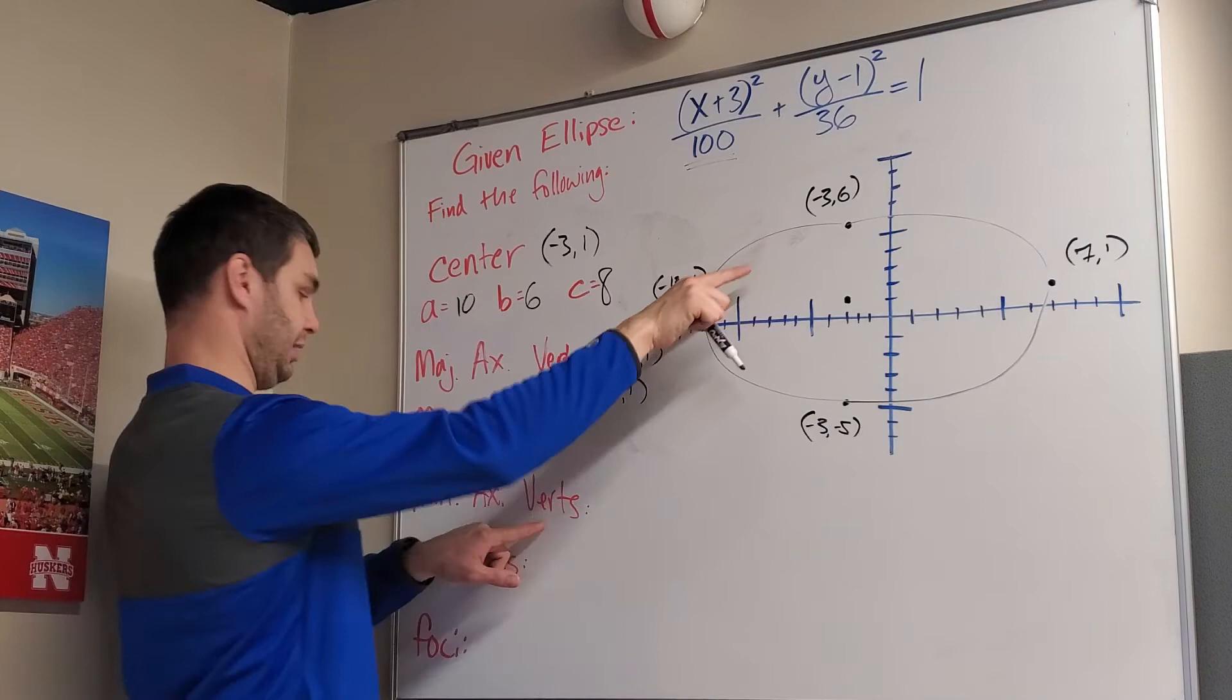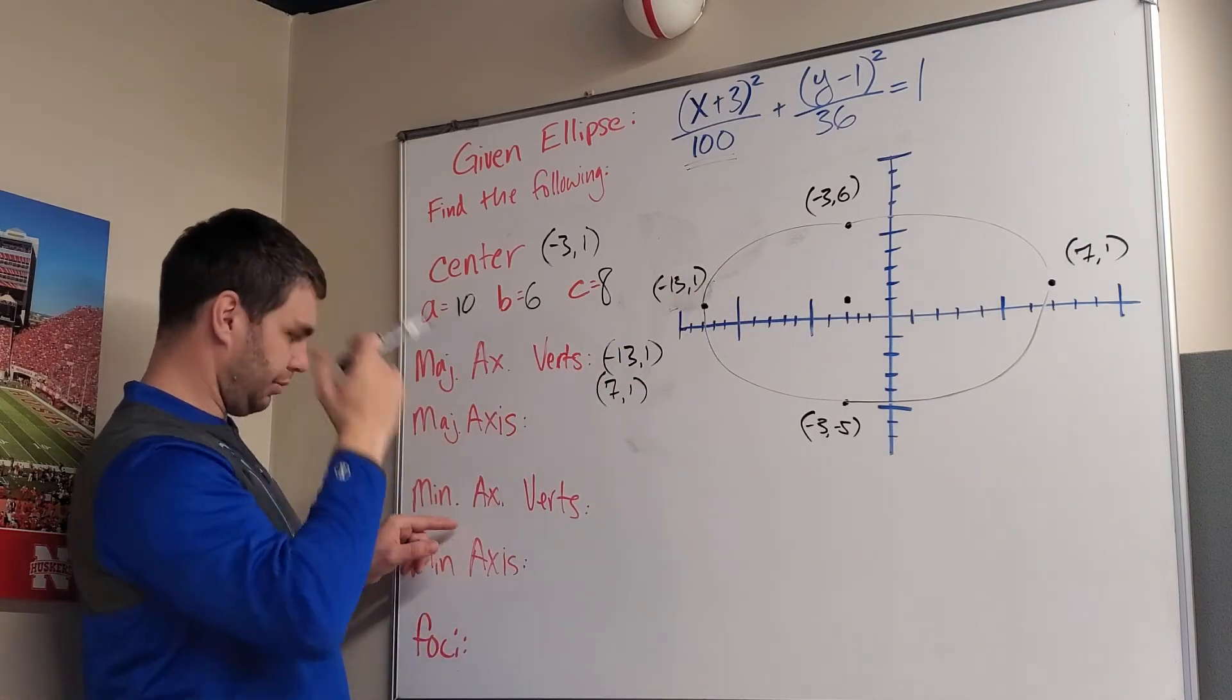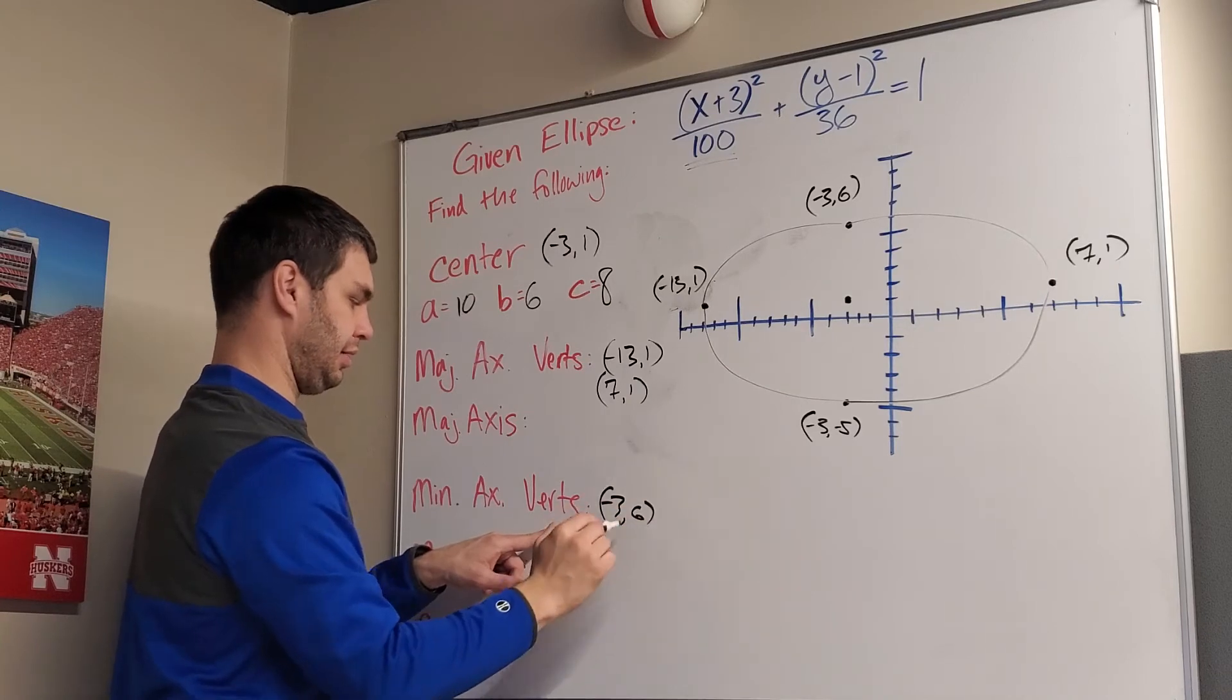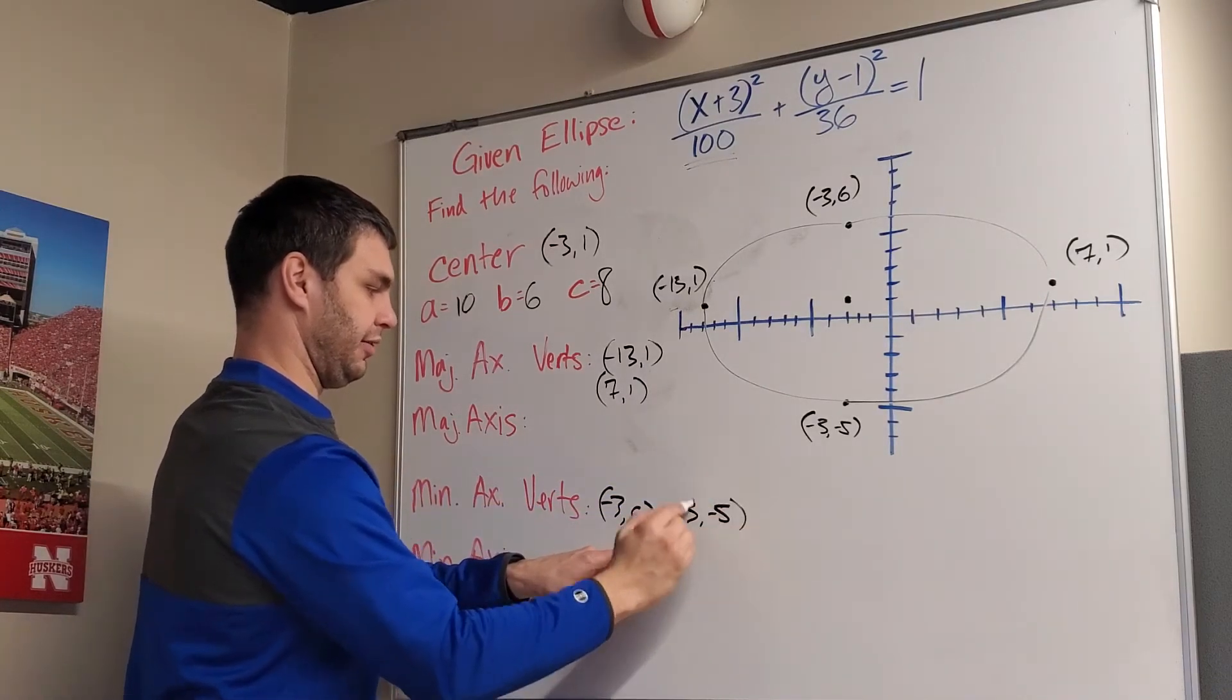We said, let's see, this was my minor axis vertices are (-3, 6) and the other one was (-3, -5).